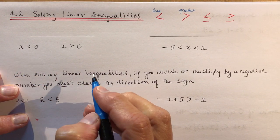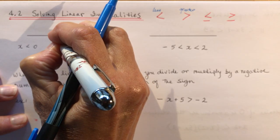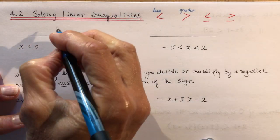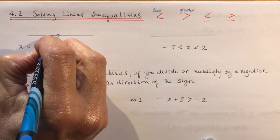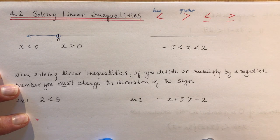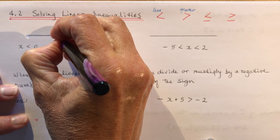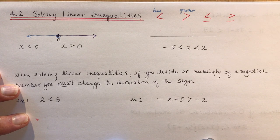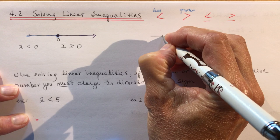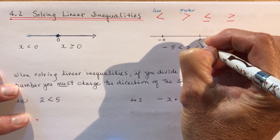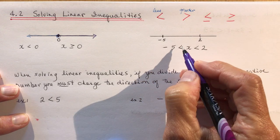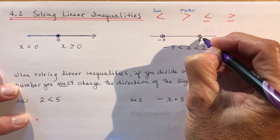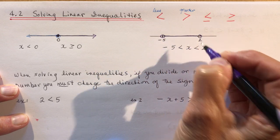Let's look at how you represent them on a number line. For x less than zero, place zero on the number line — you need an open circle and a line going to the left. For greater than or equal to, you fill in the circle. If x is between two numbers, like between negative five and positive two — greater than negative five and less than positive two — you draw an open circle at each end and join them with a line.